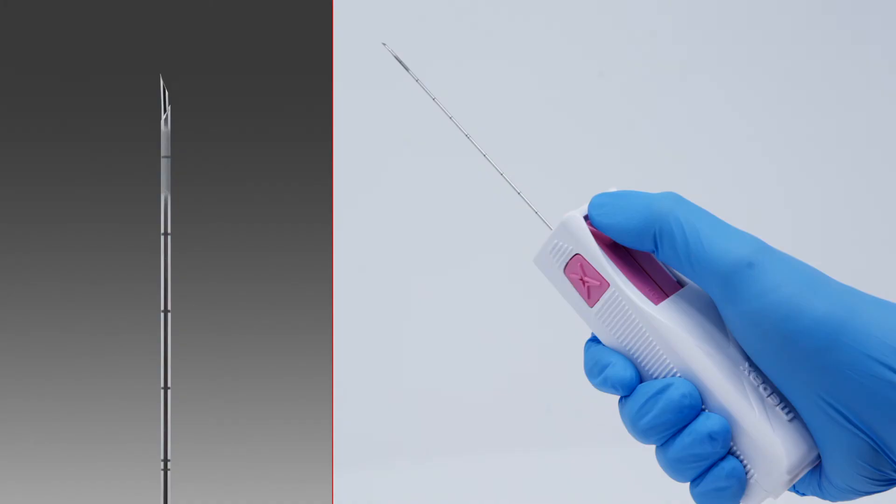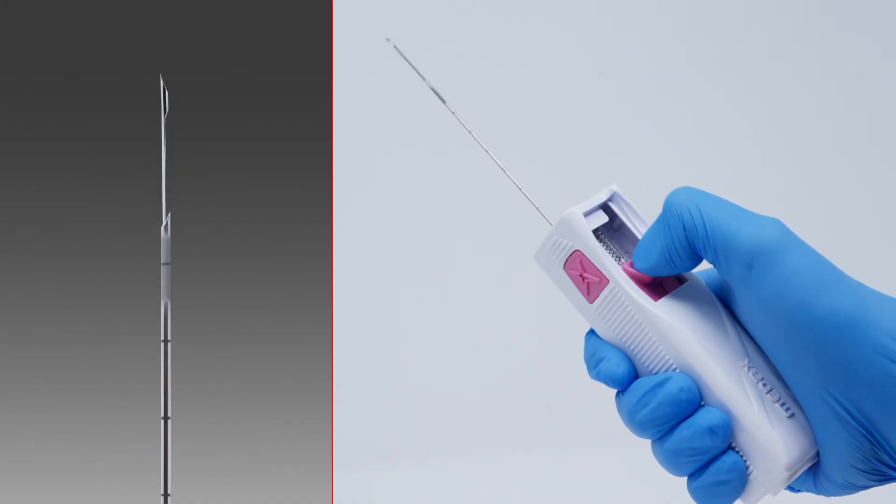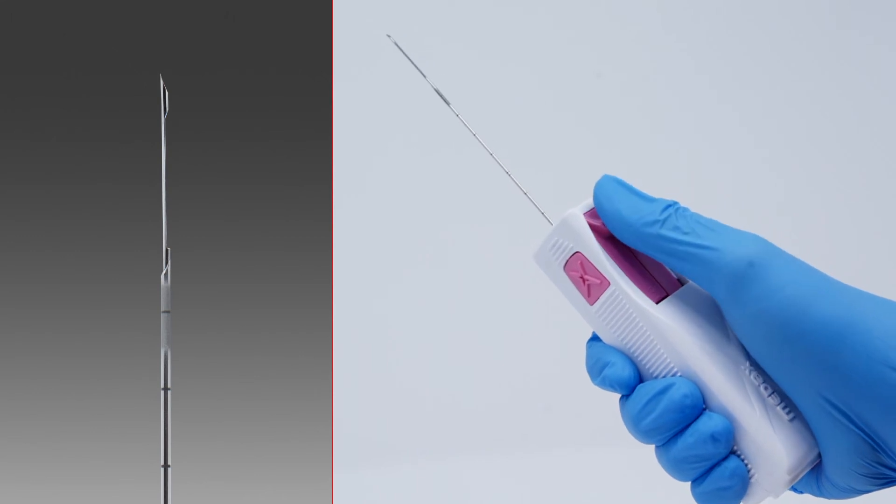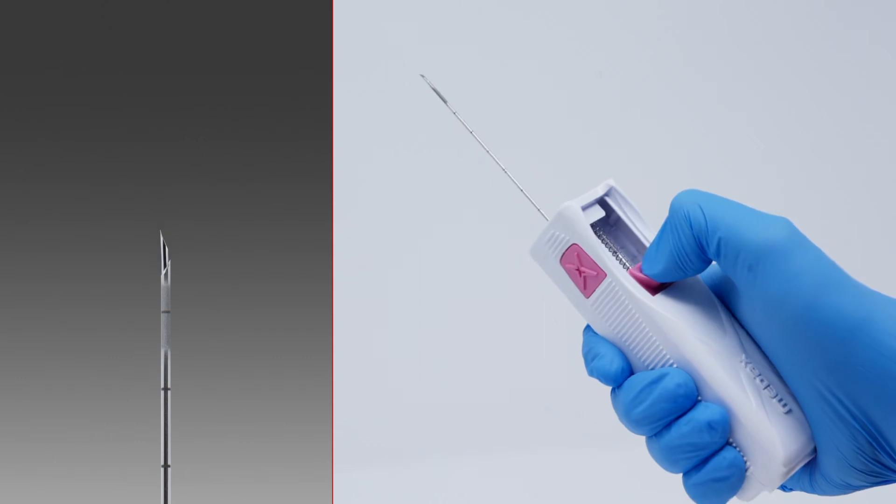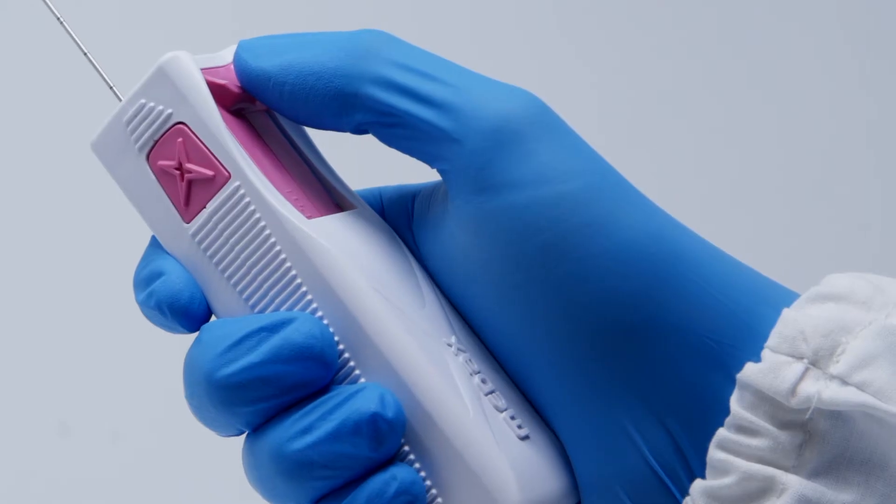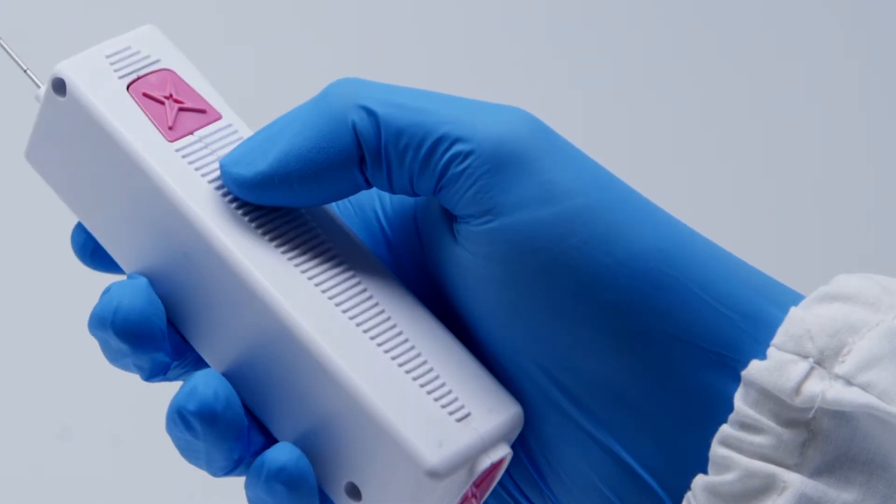Firmly hold the device and pull back the loading lever to load MedOne. Once to withdraw the cutting cannula and twice to withdraw the internal stylet. MedOne is now loaded and ready to use.